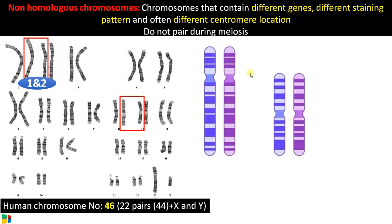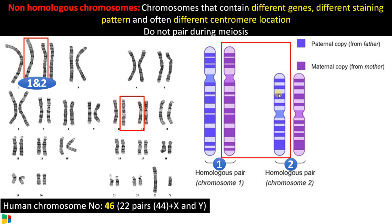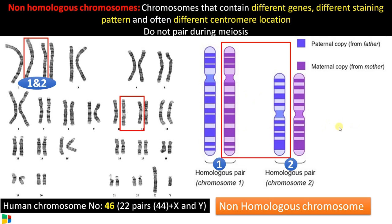Let us zoom in on these chromosomes. Suppose this is chromosome number one and this is chromosome number two. Chromosome number one and its pair have the same staining pattern, same centromeric region, and same length — that makes chromosome number one's homologous pair. Similarly for chromosome number two. But chromosome number one and chromosome number two together make a non-homologous pair. As per the definition, non-homologous chromosomes contain different genes, different staining patterns, and different centromeric positions, so they cannot pair during meiosis.